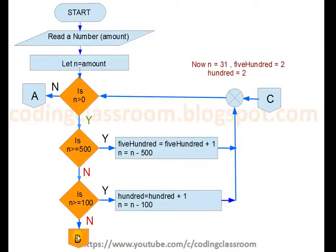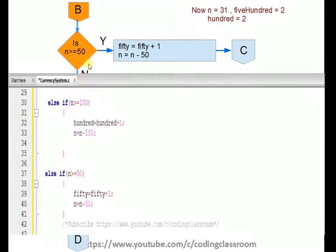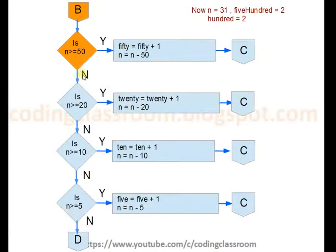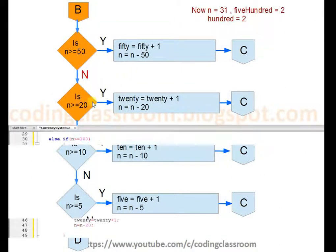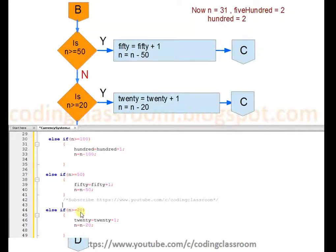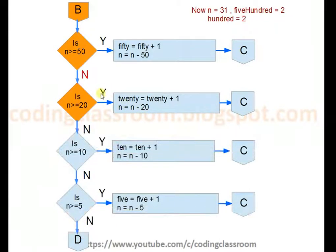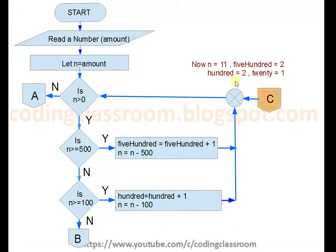n is now 31. Is n greater than or equal to 500? No. Greater than or equal to 100? No. Greater than or equal to 50? No. Greater than or equal to 20? Yes — since n is 31. So in the C program: else if n is greater than or equal to 20, we perform these operations. 20 becomes 1 and n becomes 31 minus 20 equals 11. We loop again — n is 11, and we now have two notes of 500, two notes of 100, and one note of 20.